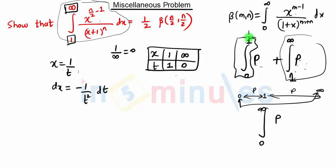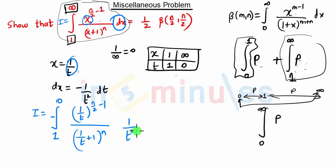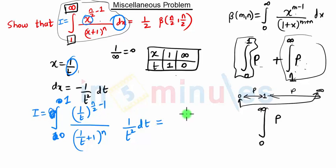Let's call this integration I. Then I becomes the integration from 1 to 0 of: x = 1/t, so (1/t) raised to (n/2 − 1), divided by (x + 1) = (1/t + 1) the whole raised to n, into dx = −(1/t²) dt. We take the minus sign inside the integration to change the limits from 0 to 1, achieving our desired limit.